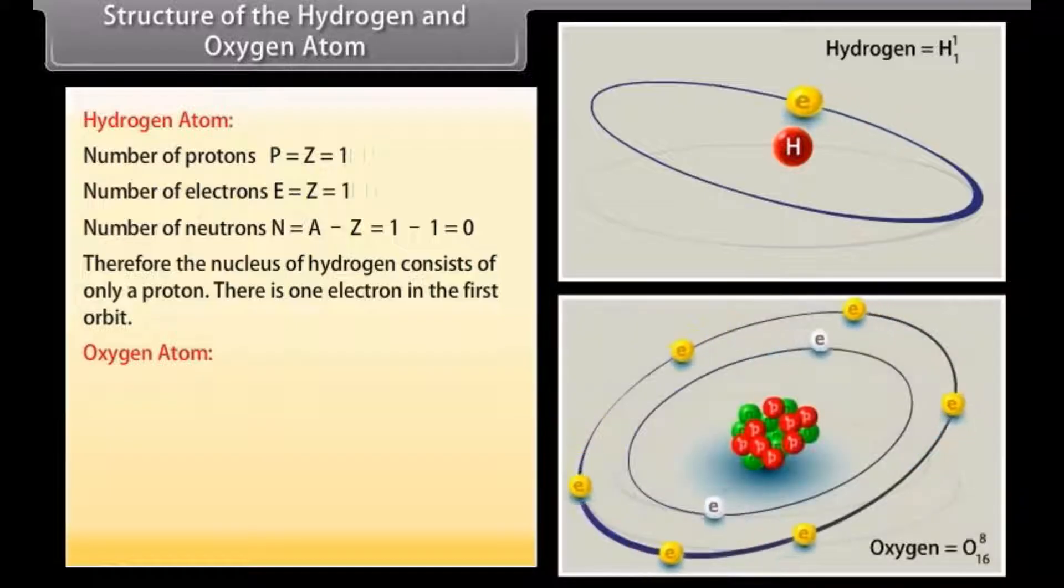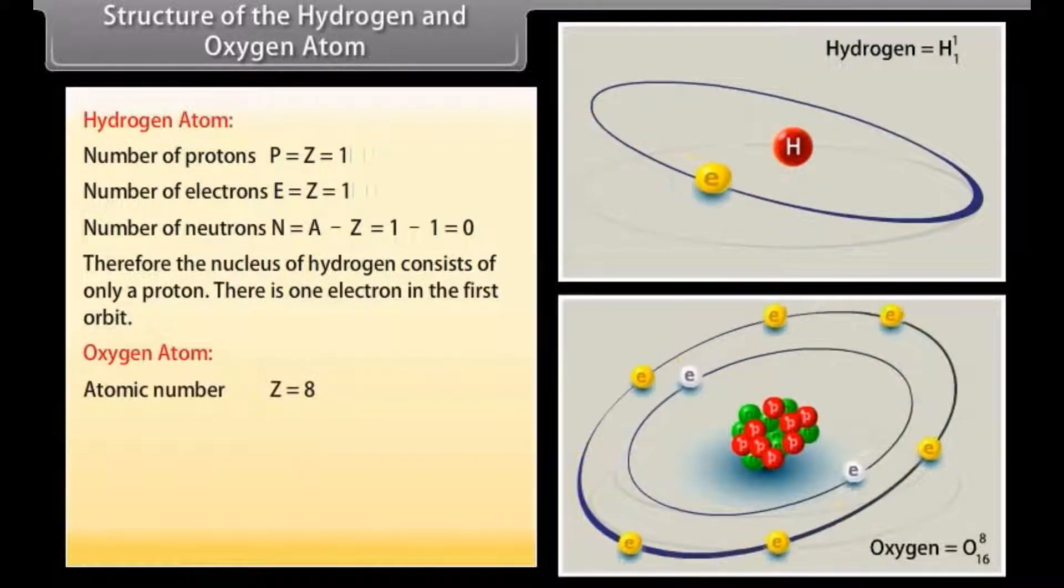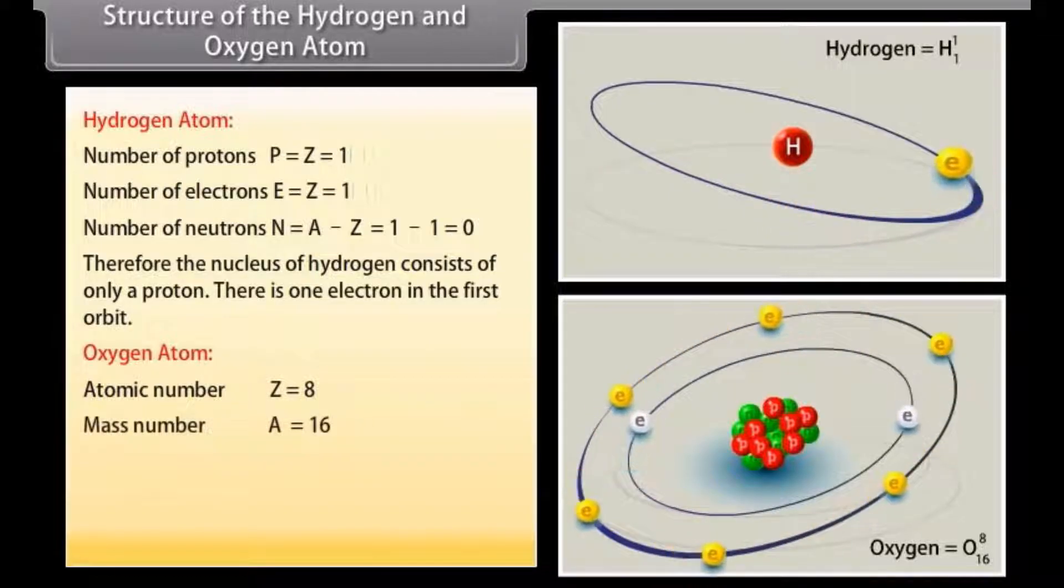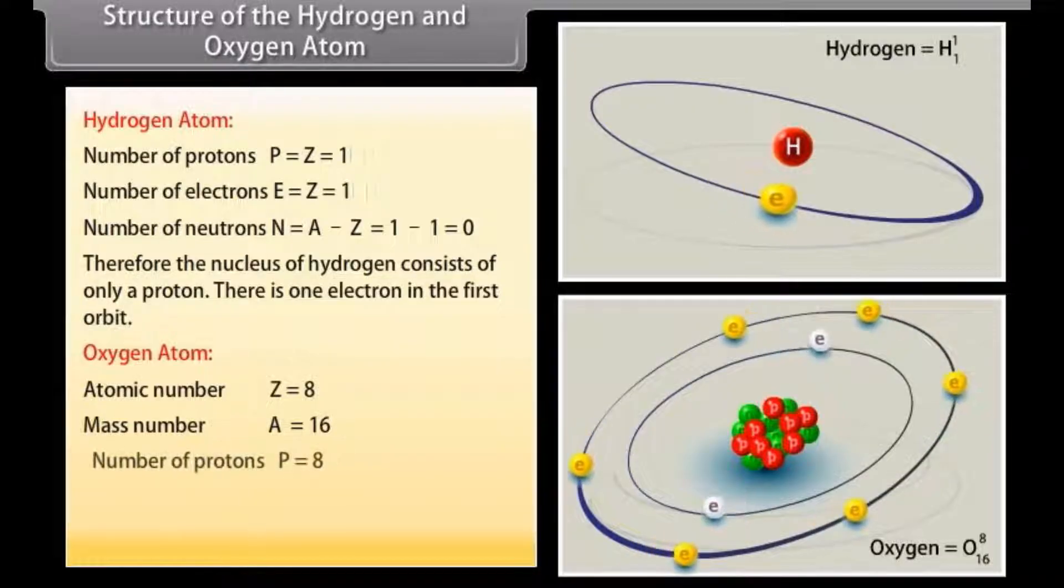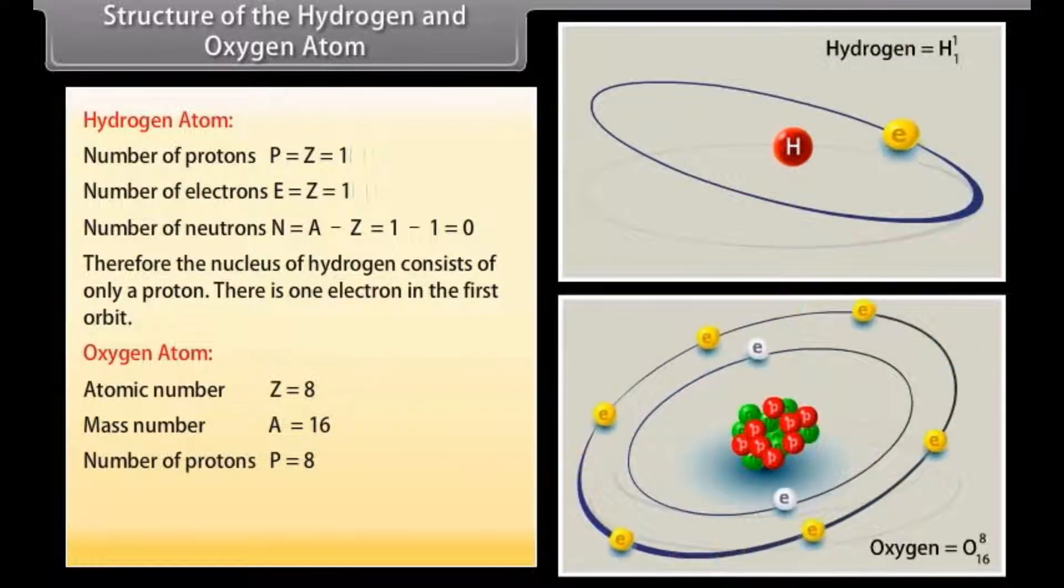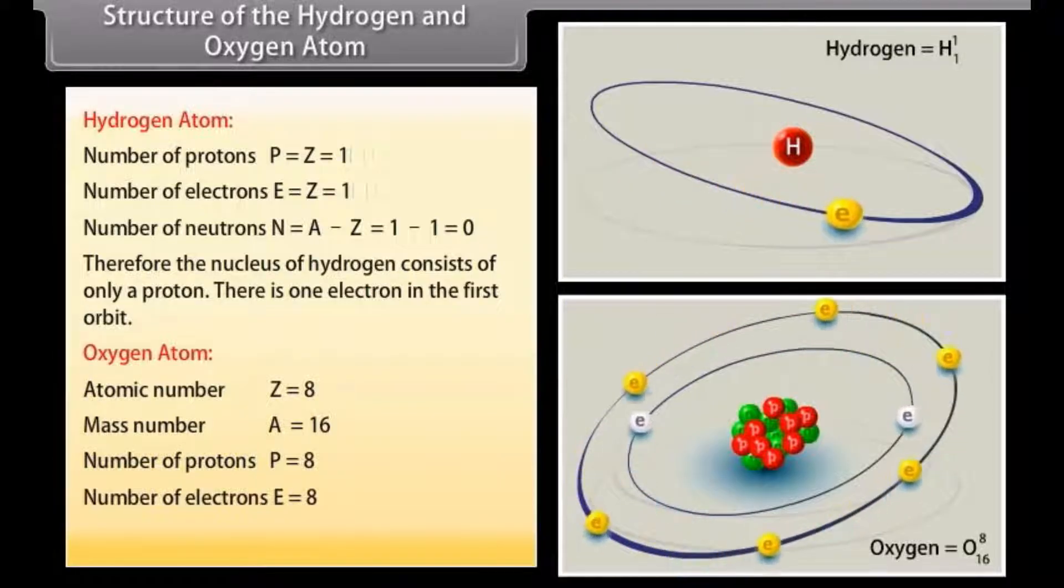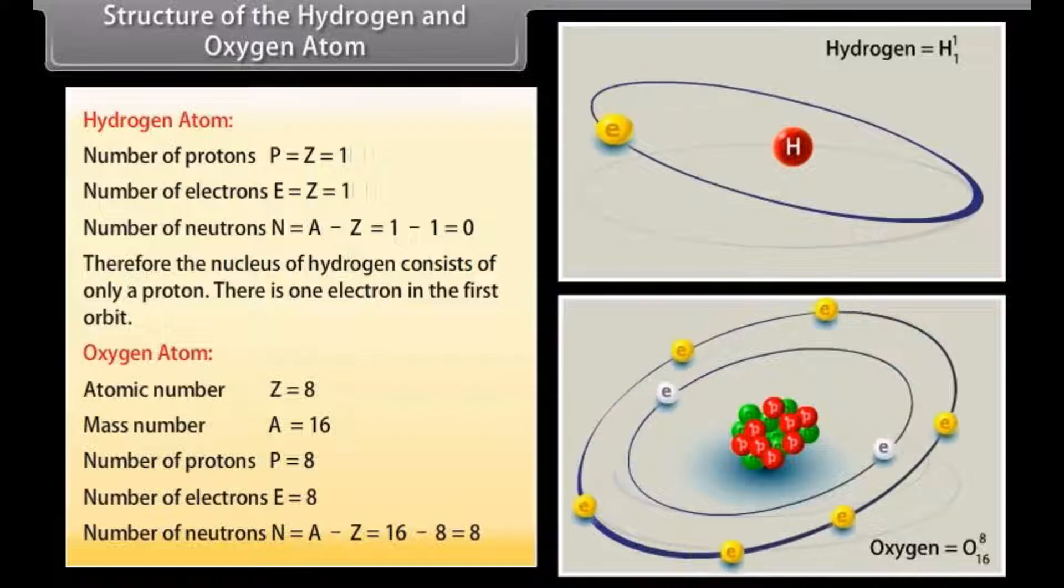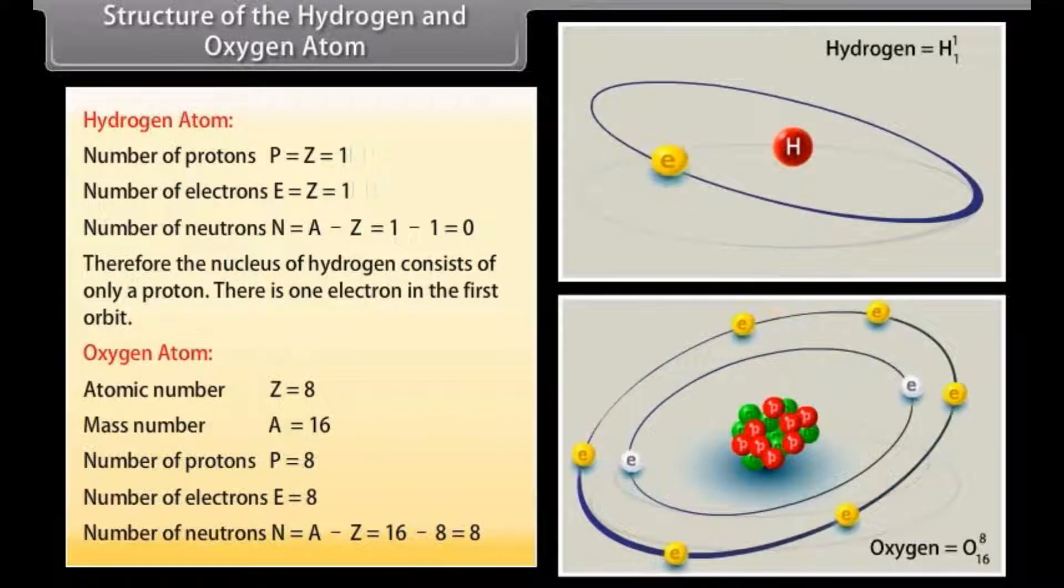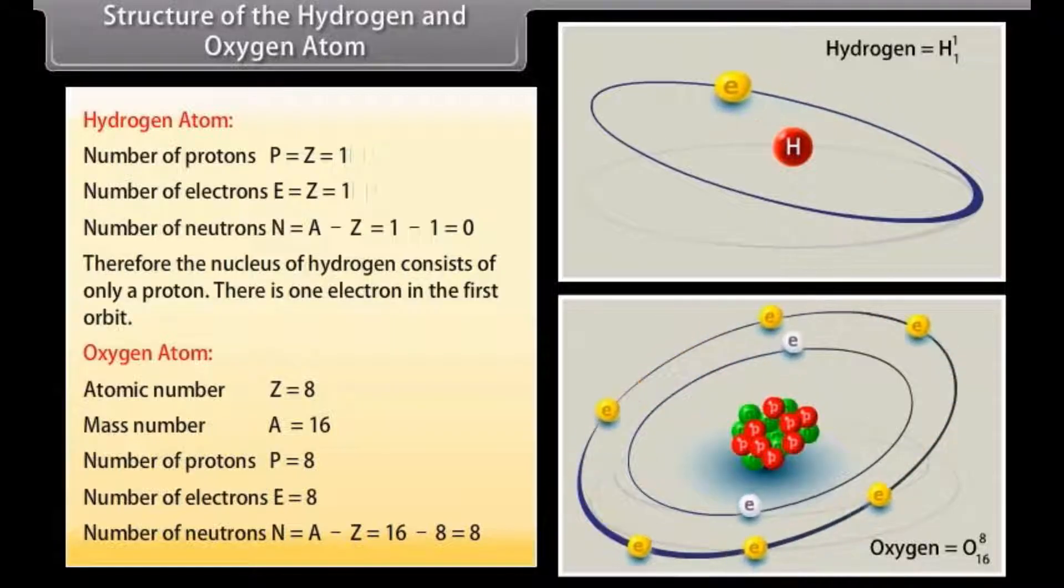Oxygen atom. Atomic number Z is equal to 8. Mass number A is equal to 16. Number of protons, P is equal to 8. Number of electrons, E is equal to 8. Number of neutrons, N is equal to A minus Z which equals 16 minus 8 which is equal to 8.